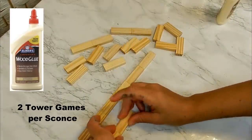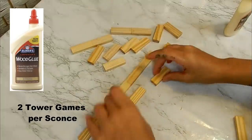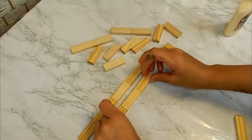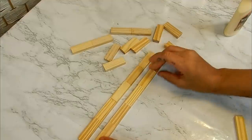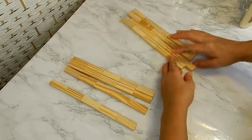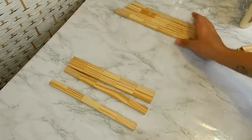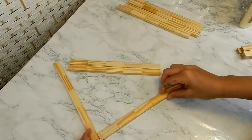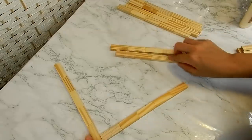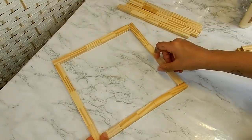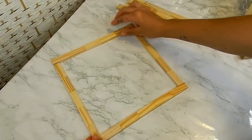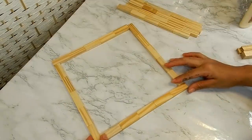So first I'm going to be taking some tumbling tower blocks and I'm just going to be gluing five of these together in a line. I'm going to be creating eight of these. Now I'm going to be taking these and gluing them in a way to create a square, just like that, using wood glue to glue these pieces together.